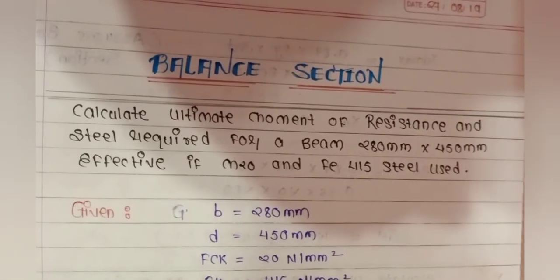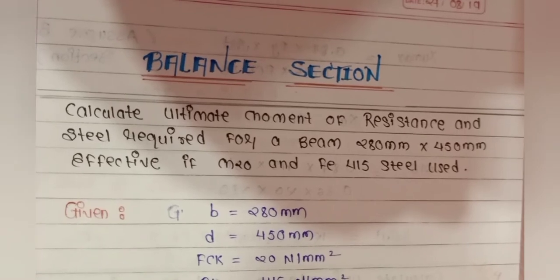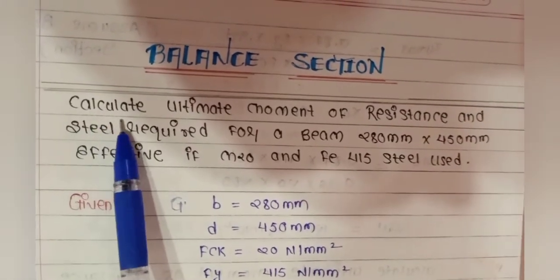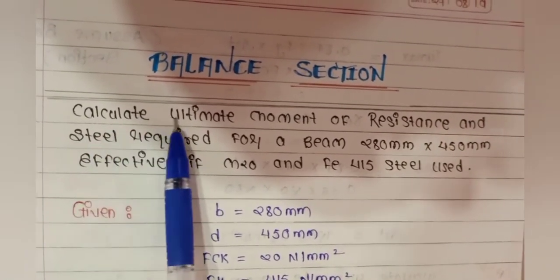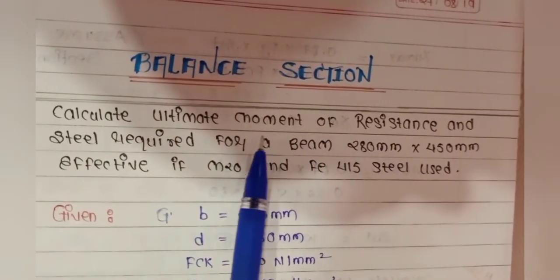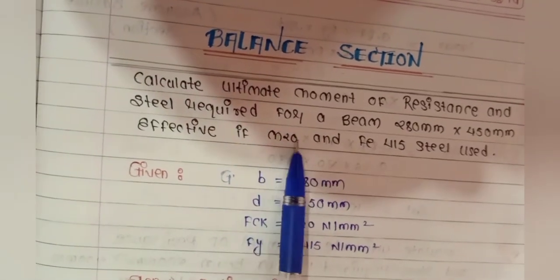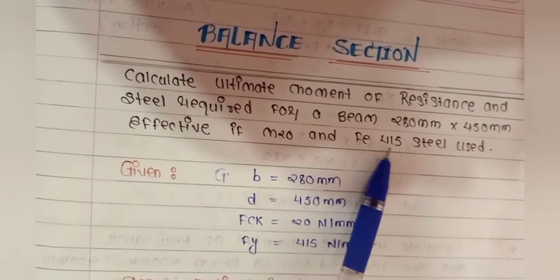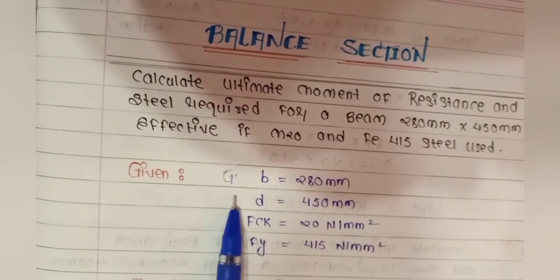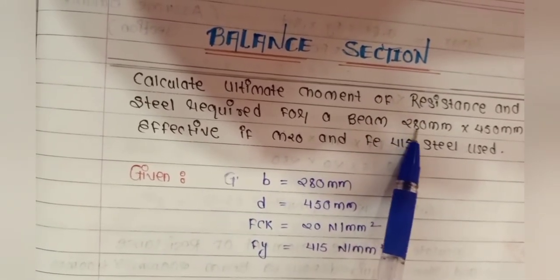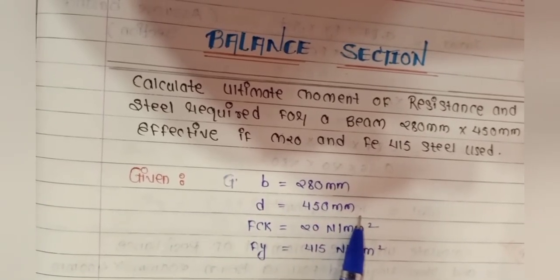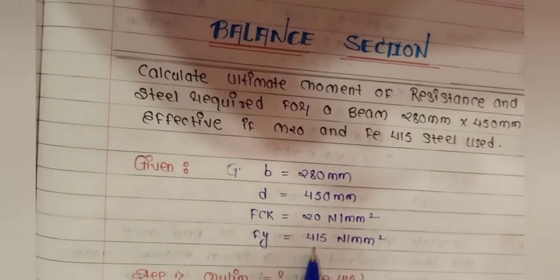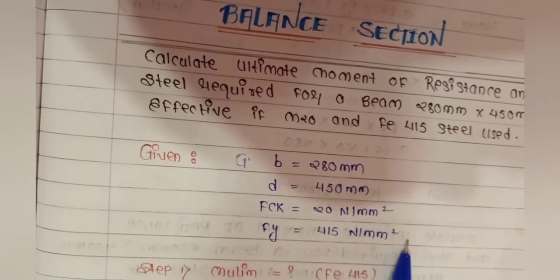The third topic is Type 3 — balanced section. Calculate the ultimate moment of resistance and steel required for a beam 280 mm × 450 mm effective, if M20 and Fe415 steel are used. Given data: B = 280 mm, d = 450 mm (effective depth), fck = 20 N/mm², fy = 415 N/mm².